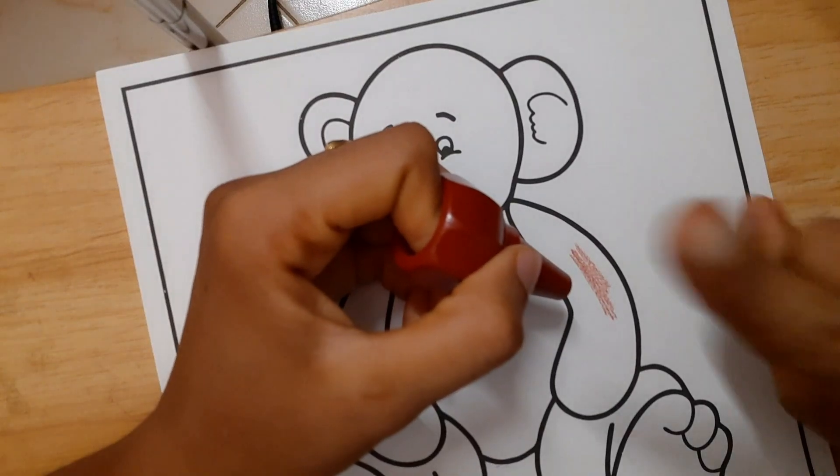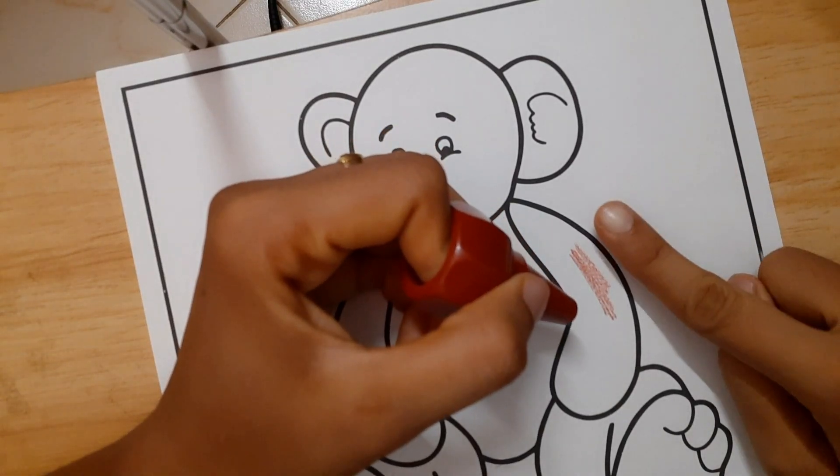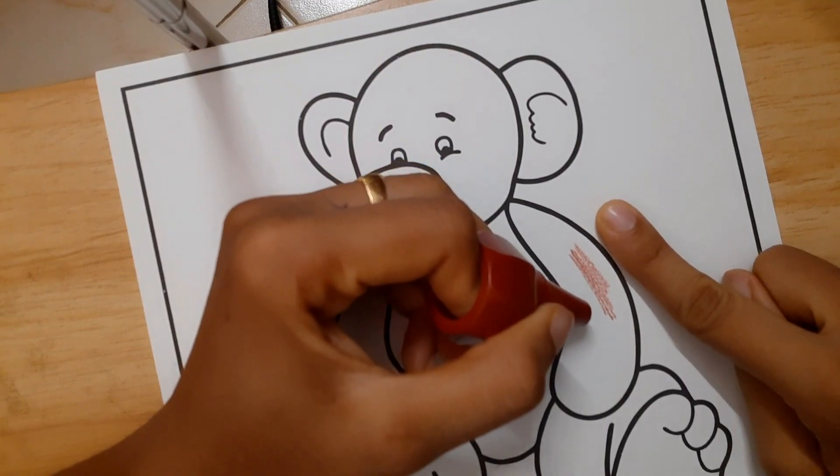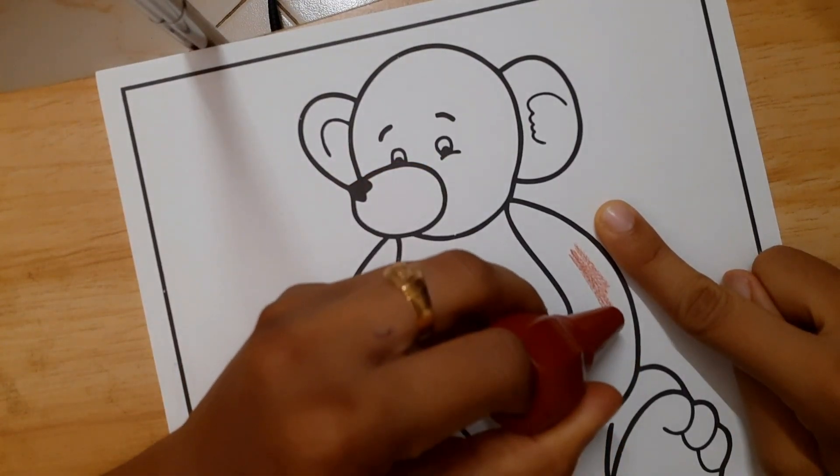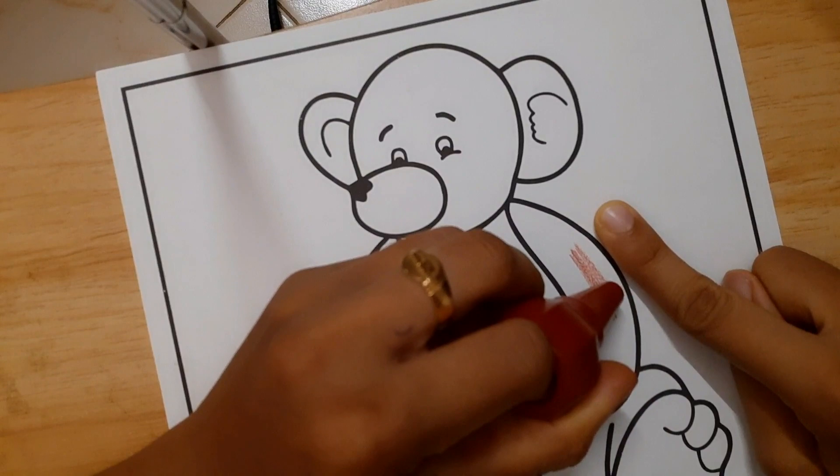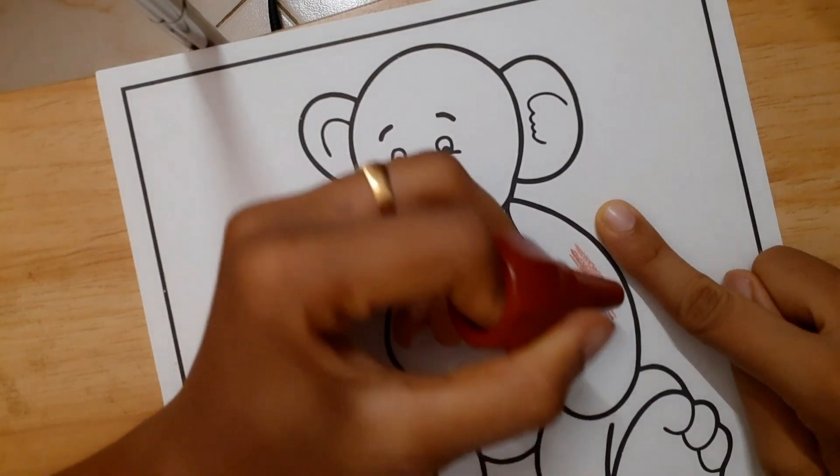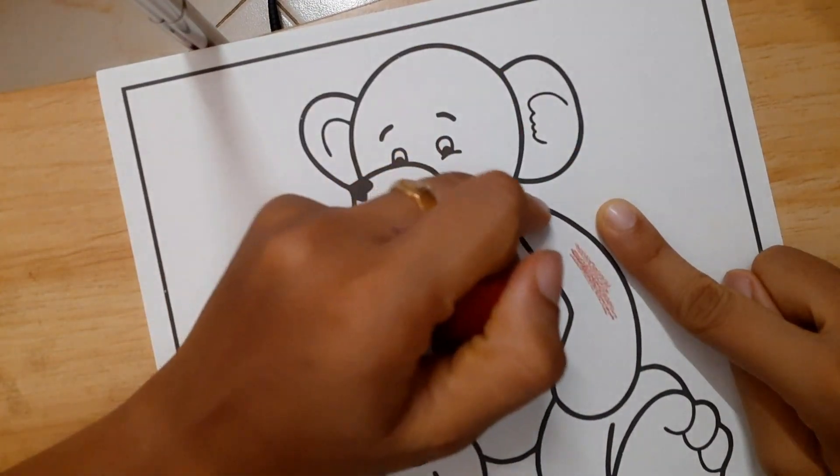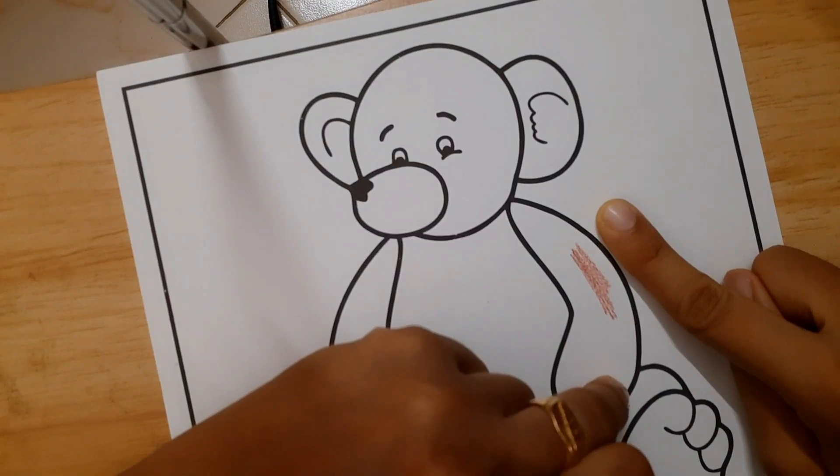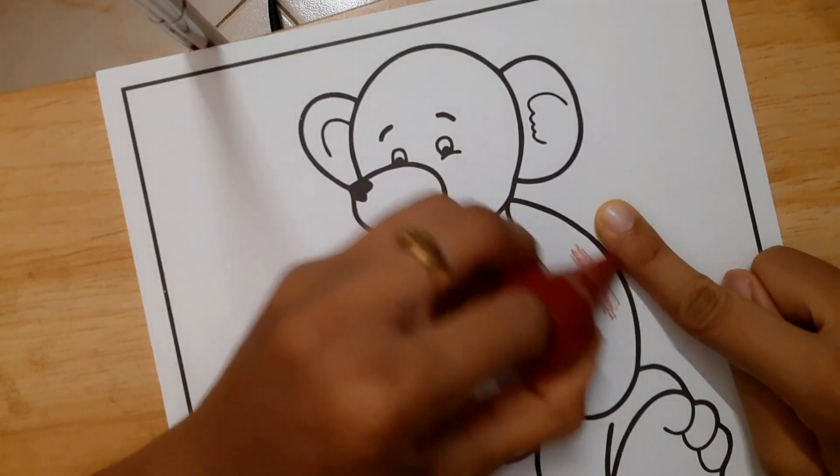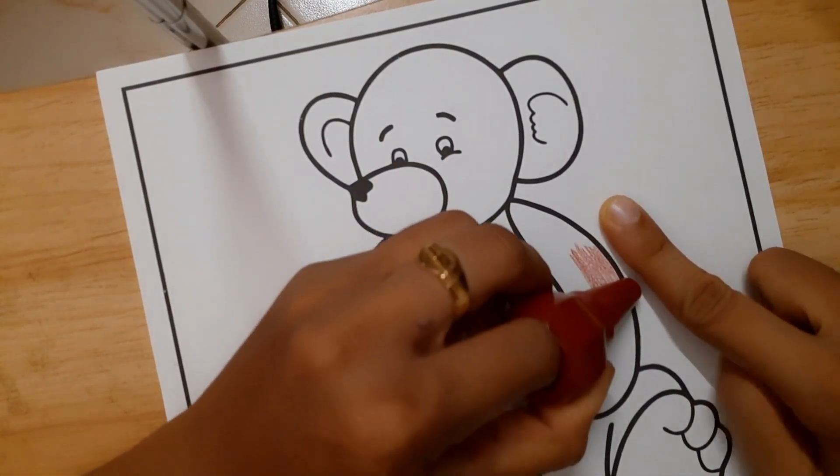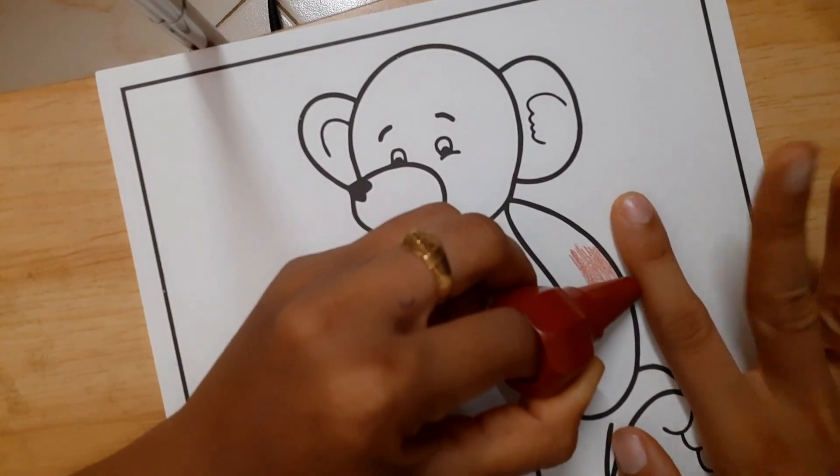You can keep your finger near to the line so that the kids will understand they are not supposed to color outside this black line. Like this, you can keep your finger.